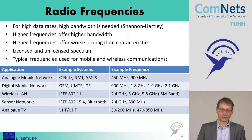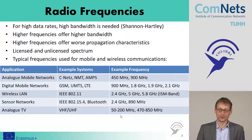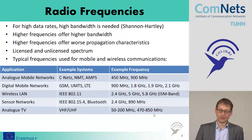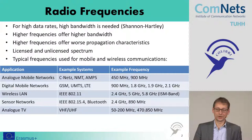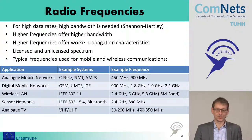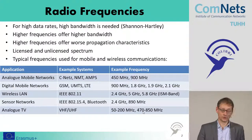Analog TV, just as an example, uses spectrum between 50 and 200 MHz, and also between 470 and 850 MHz. Now that TV is going digital, those frequencies are being freed up and everyone is looking to use them.